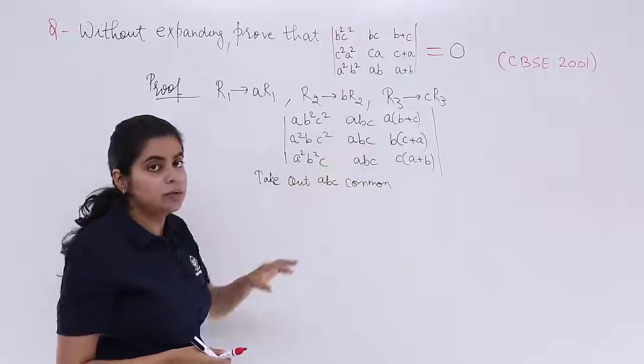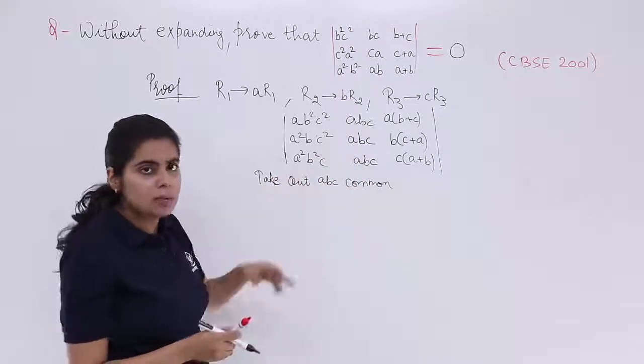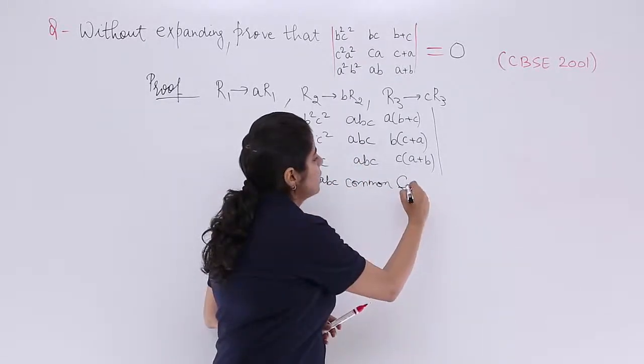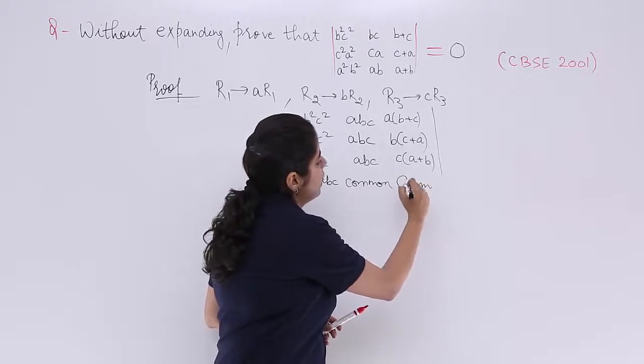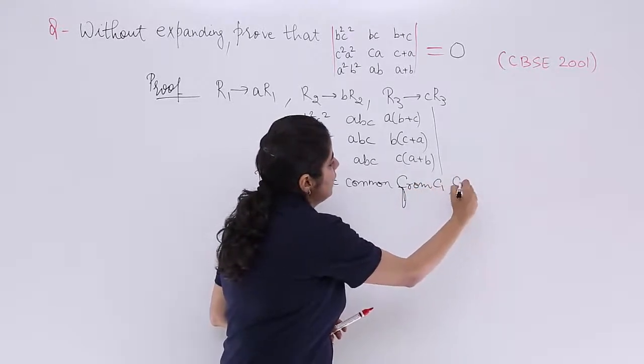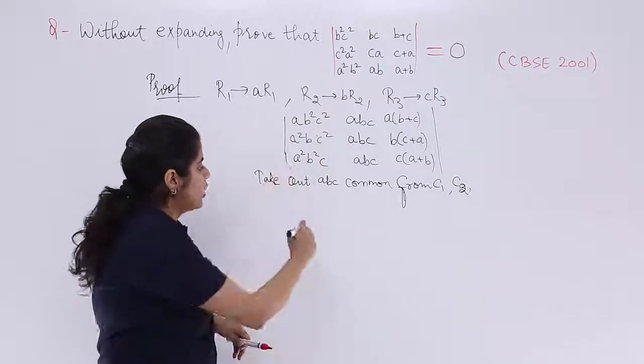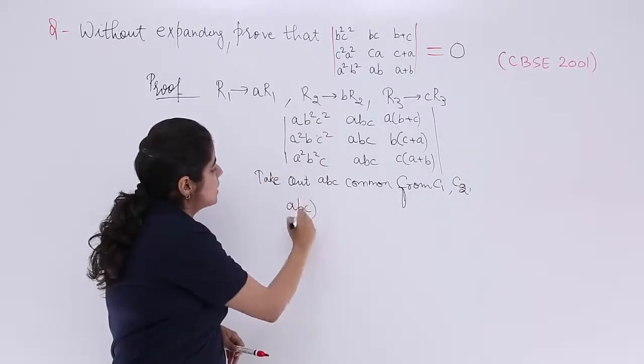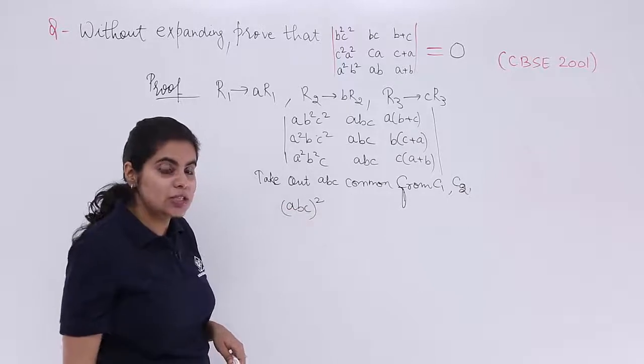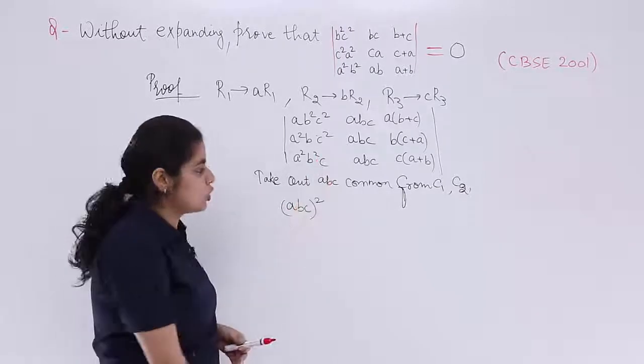From the first column as well. So from C1, I write it from C1 and C2. C1 and C2. So if ABC is taken out as common, so it is ABC whole square that is coming out as common.